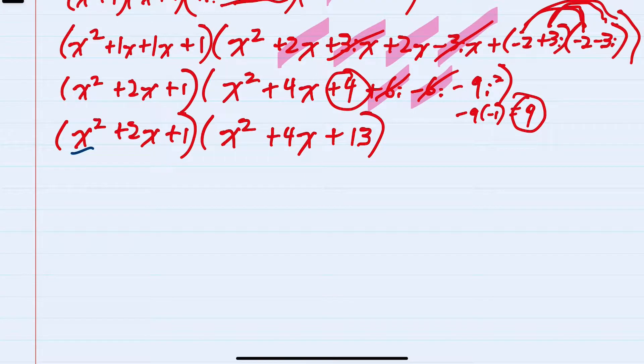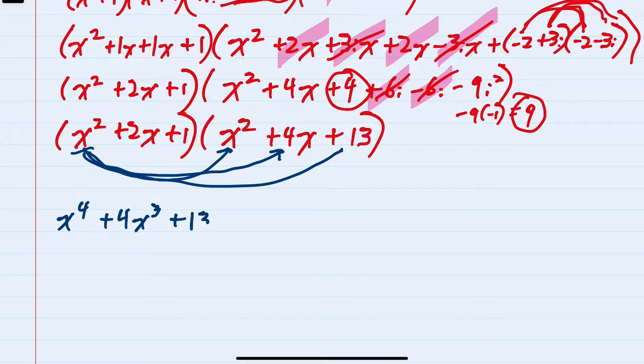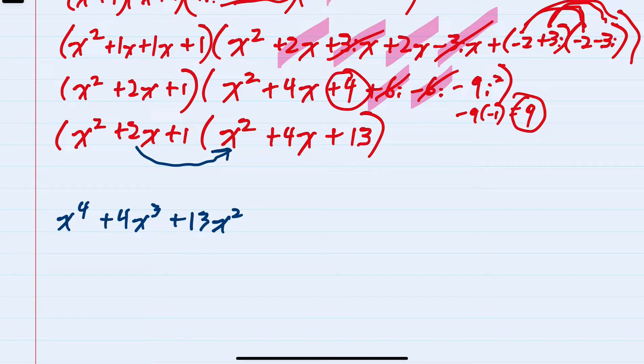Distributing that first x squared, we would have x squared times x squared, or x to the 4th, and then x squared times 4x, a plus 4x cubed, x squared times 13, a plus 13x squared. Then distributing that next term, 2x times x squared is plus 2x cubed, 2x times 4x is plus 8x squared, 2x times 13 is plus 26x.